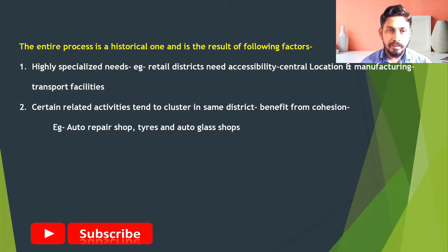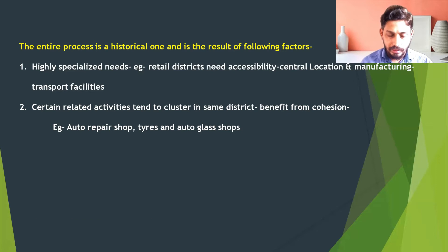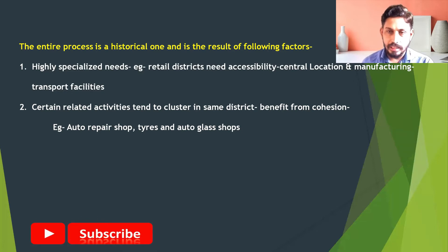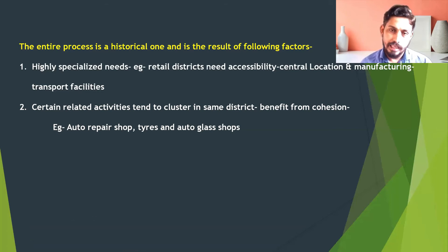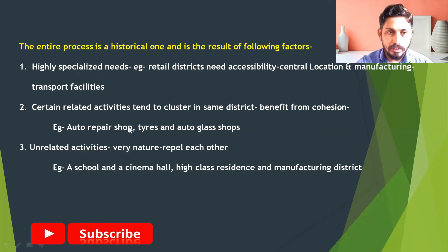The next important factor is that certain related activities tend to cluster in the same district. Due to close proximity, they benefit from cohesion — every center depends upon certain related activities. If those related activities are attracted towards a particular center, that center will automatically grow and act as a growth pole. For example, an auto repair shop is accompanied by a tire shop and related businesses.